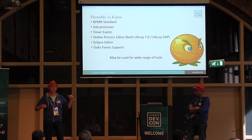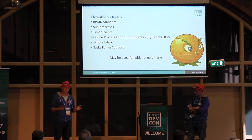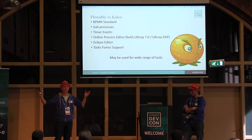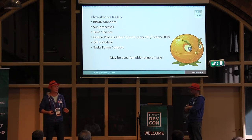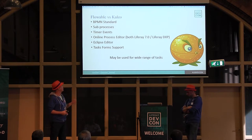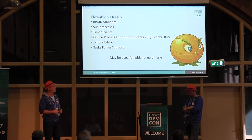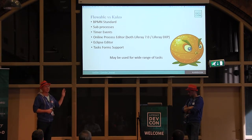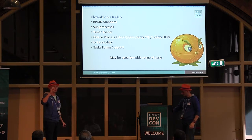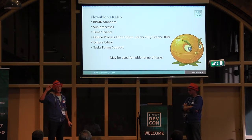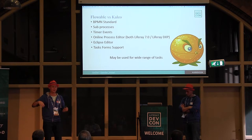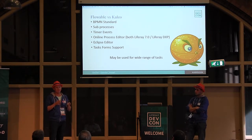Since it supports BPMN, it has many advanced elements that Kaleo doesn't have - for example, sub-processes. If you have a complex process like a credit card request approval in a bank, something from our own experience, you can handle it as a really complex process involving different parts of the bank and the attention of many people. Very nice features like timer events are also available. On any user task you can set a timer through notation without requiring any development. You can say this task should be performed within one day, and if it's not, the process goes a different way - so you can react if a task has been stopped for too long.